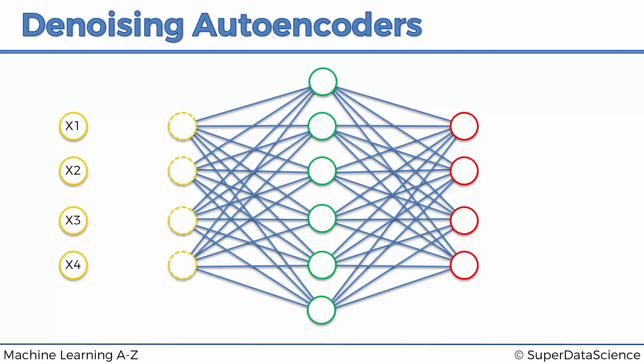So let's say we have input values x1, x2, x3 and x4. Well, what we're going to do is we're going to take these inputs and randomly out of them, we're going to turn some of them into zeros, just like that.